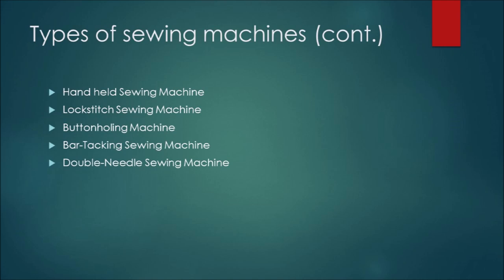Number eleven: bar tacking sewing machine. It's used for sewing strings. It has colors and pocket openings.